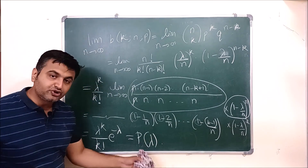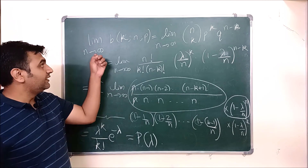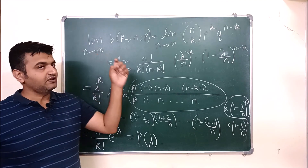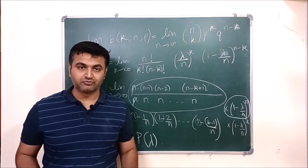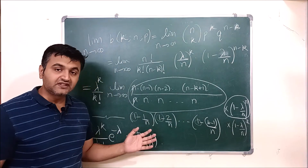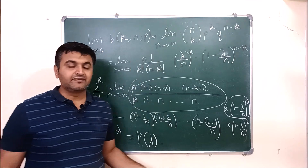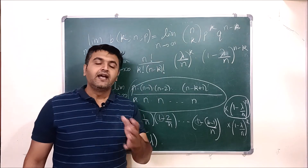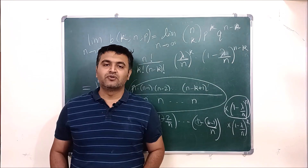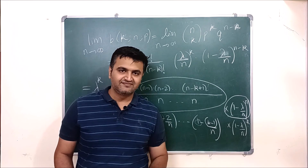So we obtain lambda raised to k, divided by k factorial, times e raised to minus lambda — which is exactly the Poisson distribution p(lambda). Thus the Poisson distribution is the limiting case of the binomial distribution. I hope the proof is clear. If you have any doubts you can ask in the comment section, and if everything is clear, don't forget to like, share, and subscribe. Thank you.